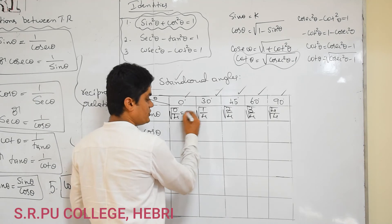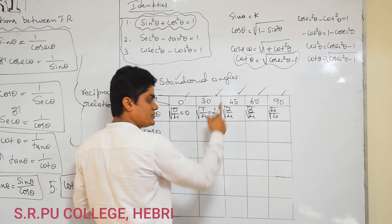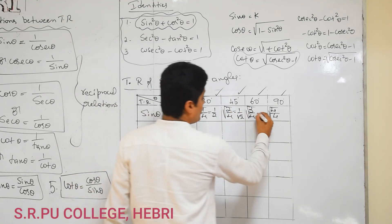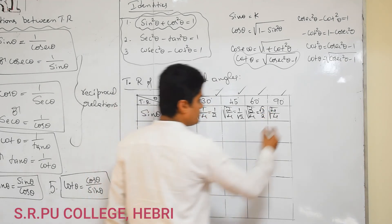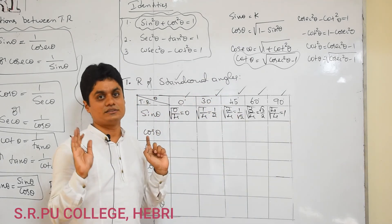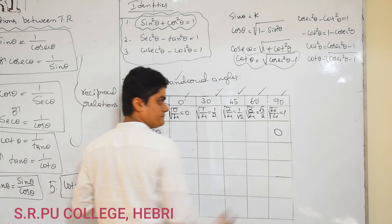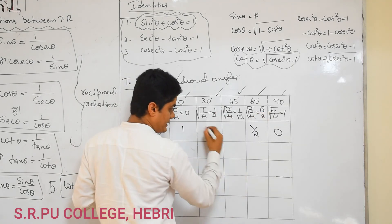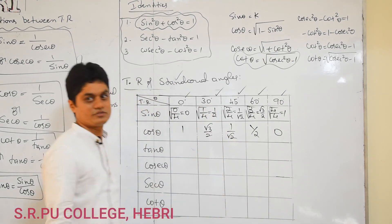Zero by four gives zero. Square root of one by four gives one by two. Square root of two by four gives one by root two. Square root of three by four gives root three by two. Four by four is one, and square root of one is one. So the sin row is: 0, 1/2, 1/√2, √3/2, 1. Only the first row — sin theta — needs to be filled this way. For the cos row, the values are simply the reverse order of the sin row.